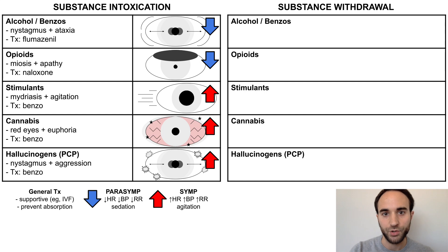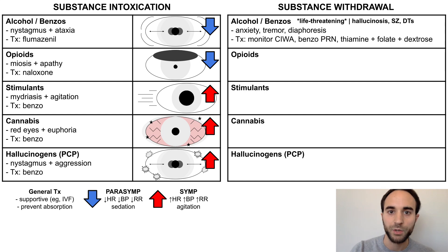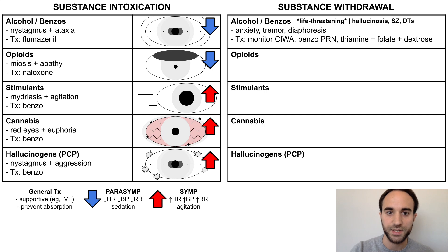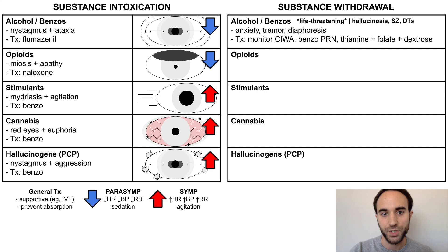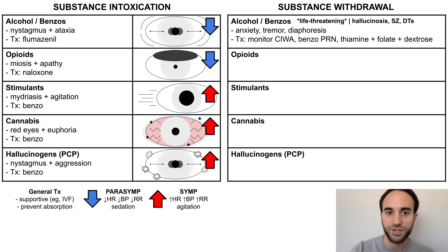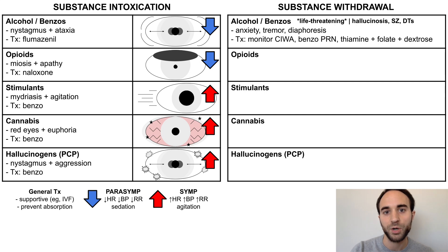Next, let's move on to the withdrawal syndromes. For the most part, withdrawal syndromes will look like the opposite of the intoxication syndromes. For example, while alcohol intoxication involves mental status depression, alcohol withdrawal involves anxiety and agitation, along with other signs of sympathetic activation, such as tremor and diaphoresis.